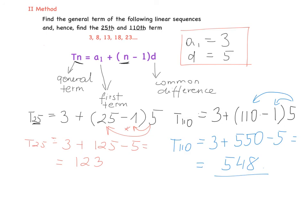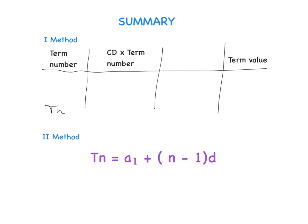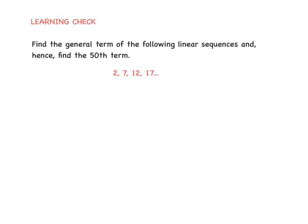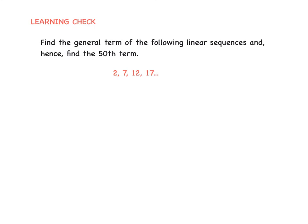Make sure you have both methods in your copies. Tomorrow you can choose which one you prefer, but you need to learn one by heart — either the formula or the table. After watching this video you should be able to find any term I ask you to find — 50, 75, 10, or 200. For the learning check, find the general term of the following linear sequences and hence find the 50th term, using both the table and the formula.